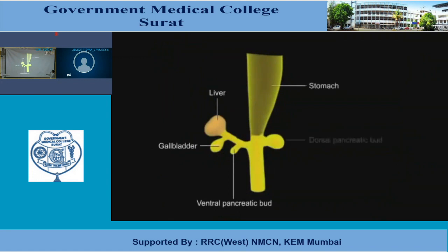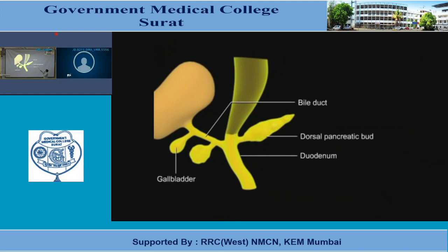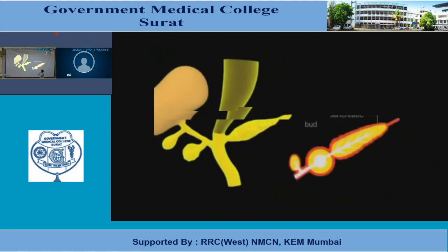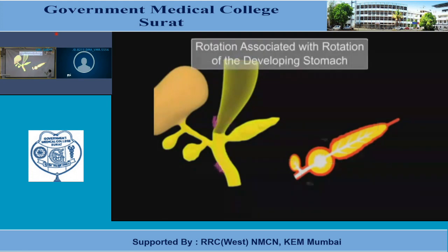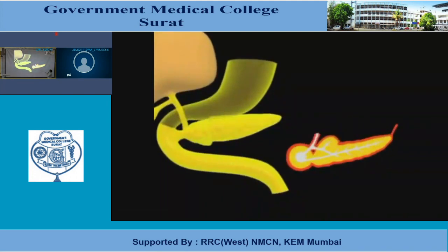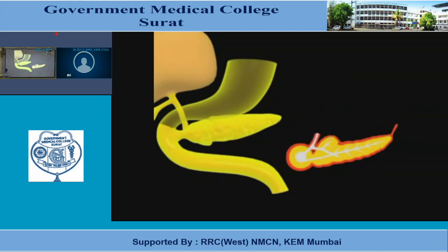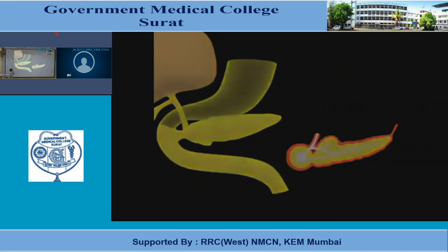You can see: liver, gallbladder, ventral pancreatic bud, dorsal pancreatic bud, foregut, and part of the duodenum. The bile duct, dorsal pancreatic, ventral pancreatic — the ventral pancreatic bud rotates around the axis like this. In this you can see the tail, body, and head — the upper part and lower part which is called the ventral pancreatic bud.